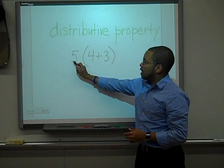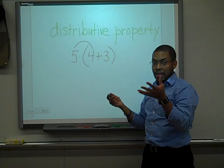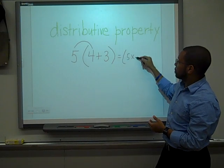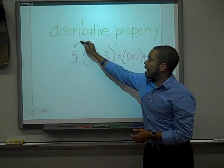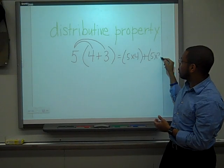So we're going to distribute the 5 through multiplication to the 4 and that should be 5 times 4. And then we add that to the 5 being distributed multiplied to the 3 as well, which is 5 times 3.